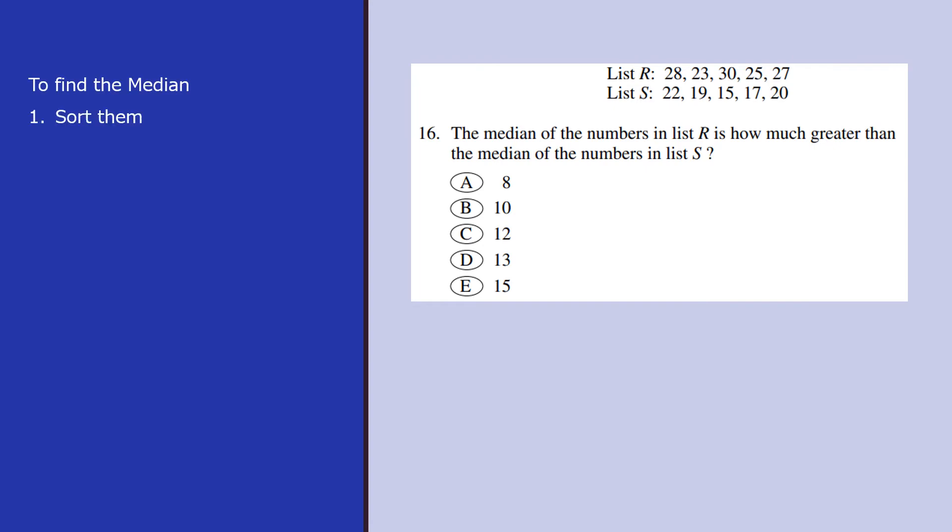First of all, the median is nothing but the middle term. Before finding the middle term, we have to sort them out and then pick the middle term. Median is always the middle term after sorting them out. I have sorted them out according to ascending order. For list R, the middle term is 27 and for list S, the middle term is 19 and the difference between those two is 8 and hence the answer is 8.